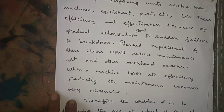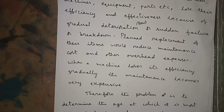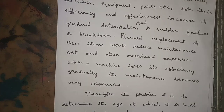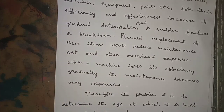When a machine loses its efficiency gradually, the maintenance cost becomes very expensive. For example, with vehicles — two-wheeler or four-wheeler — after buying them and using them for five, six, or ten years, they lose their efficiency. The maintenance cost of that item, whether a car or two-wheeler, will become expensive. If we replace it — that is, if we sell that product — we can reduce our maintenance cost.